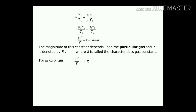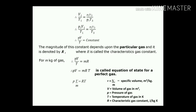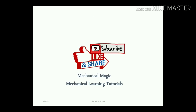For m kg of mass: PV/T = mR, so PV = mRT. This is called the equation of state of a perfect gas. Here, P × (V/m) = R × T, where V/m is the specific volume in m³/kg. So the equation simplifies to Pv = RT, where v is specific volume. Thank you very much. If you like this, please subscribe, like, and share Mechanical Magic and Mechanical Learning Tutorials.